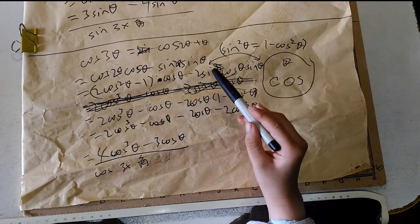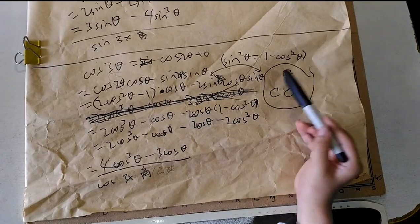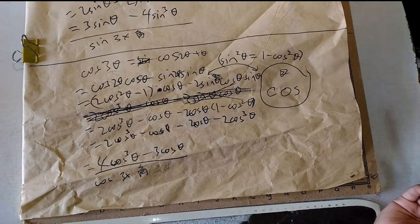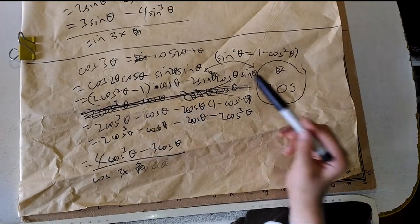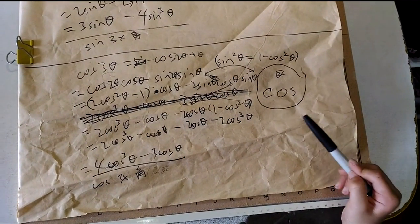Right here, we have 2 sines. What you get by multiplying 2 sines, you get sine squared. And sine squared equals 1 minus cosine squared θ.